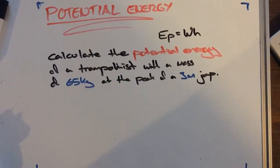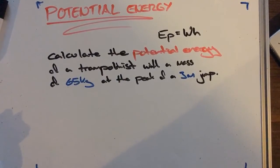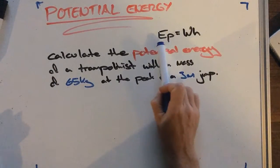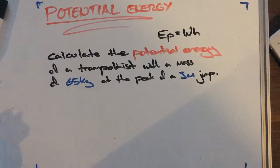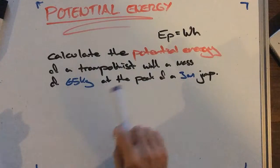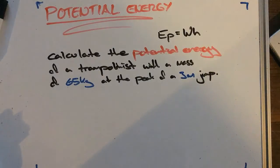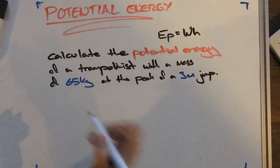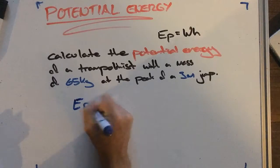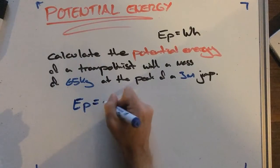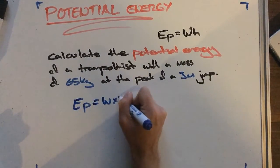Kia ora team. So what we're looking at here is how to calculate potential energy. Our formula for potential energy is: potential energy is equal to our weight times our height. So if we get a question that states: calculate the potential energy of a trampolinist with a mass of 65 kg at the peak of a 3 meter jump. We're going to first get our formula for potential energy — weight times height.